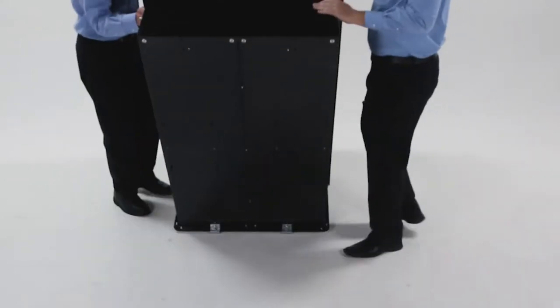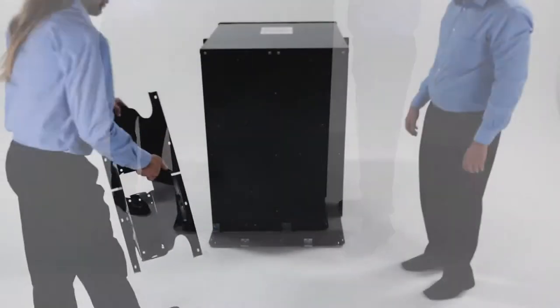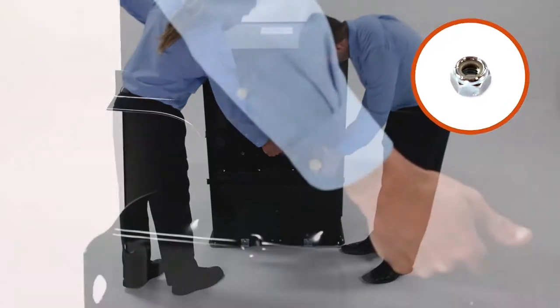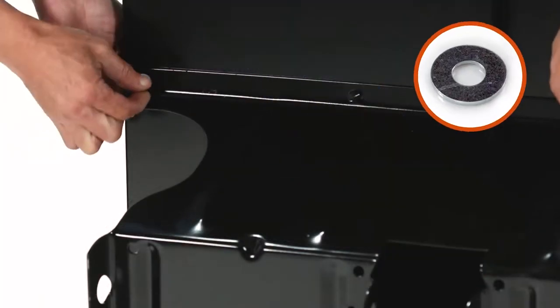To begin, tip the cart back to rest on its rear. Next, align the wheel support and secure it using eight 5-16-inch nylock nuts and 5-16-inch washers.